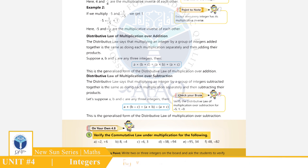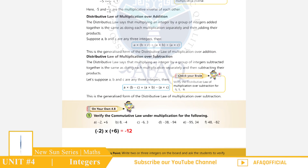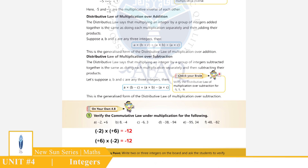Question 1: Verify the commutative law under multiplication. (−2) × (+6) = −12۔ اسی طرح (+6) × (−2) = −12۔ So it is verified: A × B = B × A. بقية سوالات آپ خود حل کریں۔